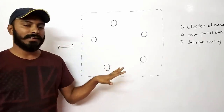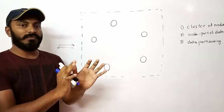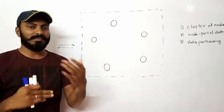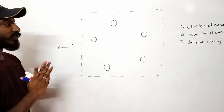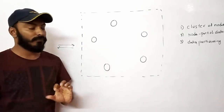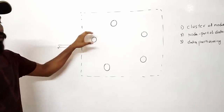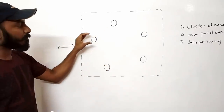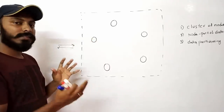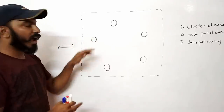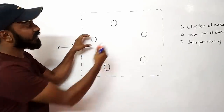Unlike in MySQL, where you partition data and use master-slave strategies, in here there is nothing like master or slave. Everyone is treated equally — every machine or every node is treated equally. Every machine is given the primary responsibility of saving some part of the data, and they also have the secondary responsibility of keeping a data backup of some other node.